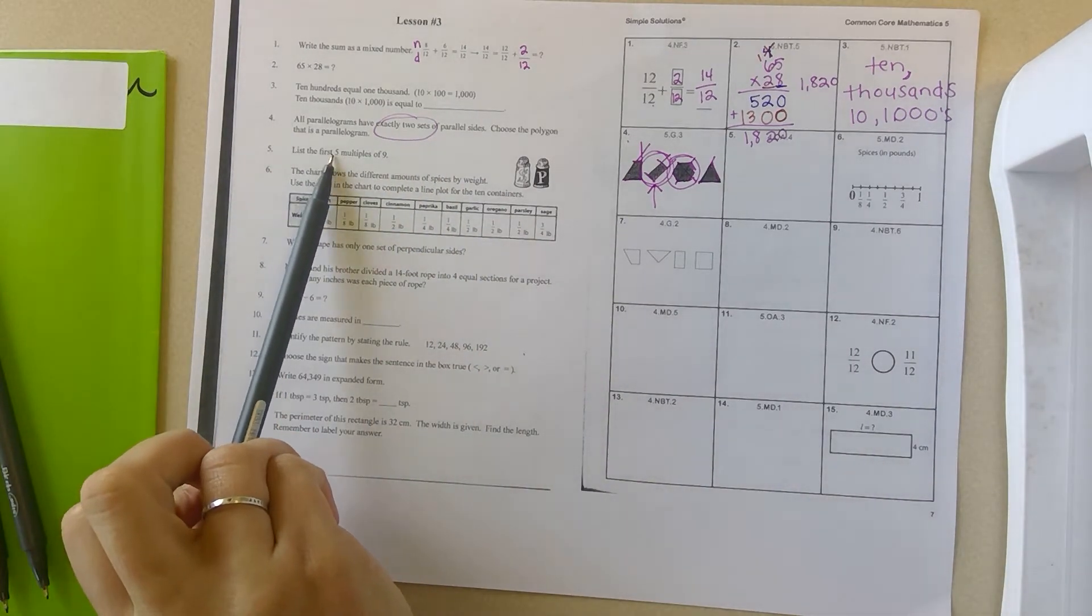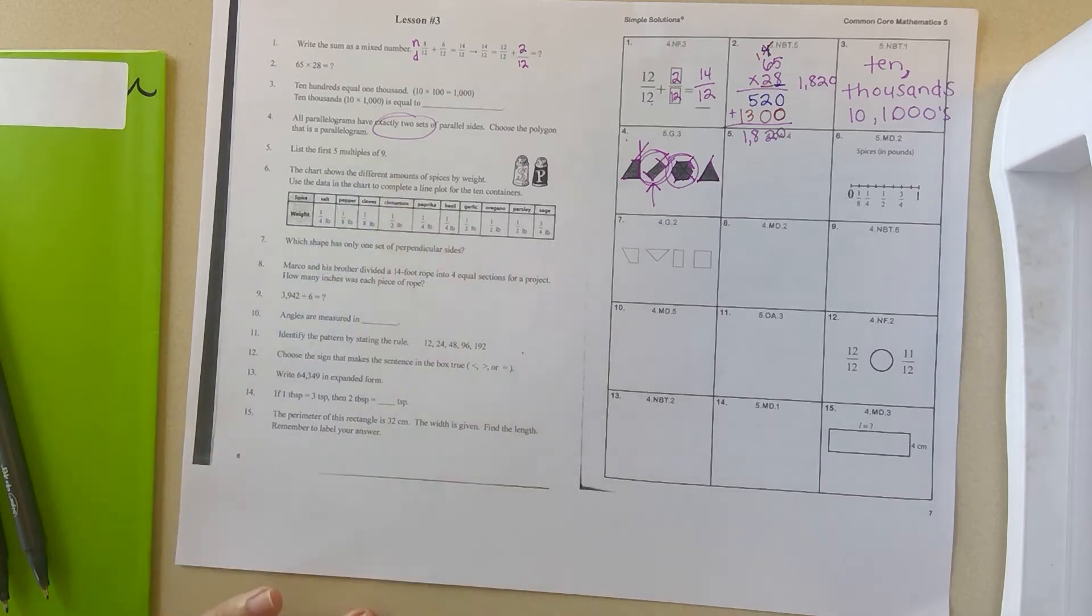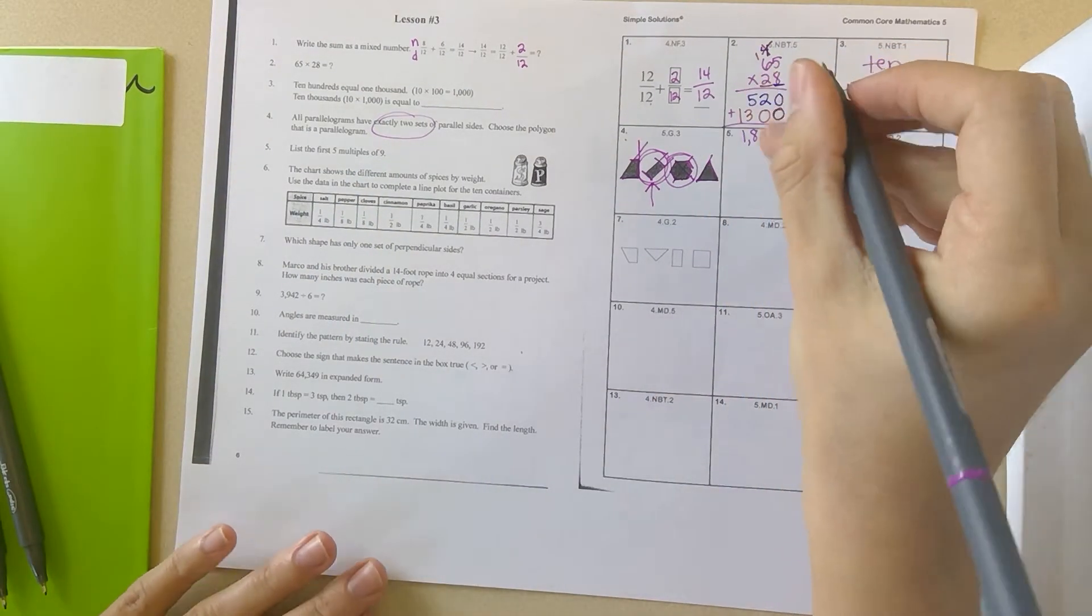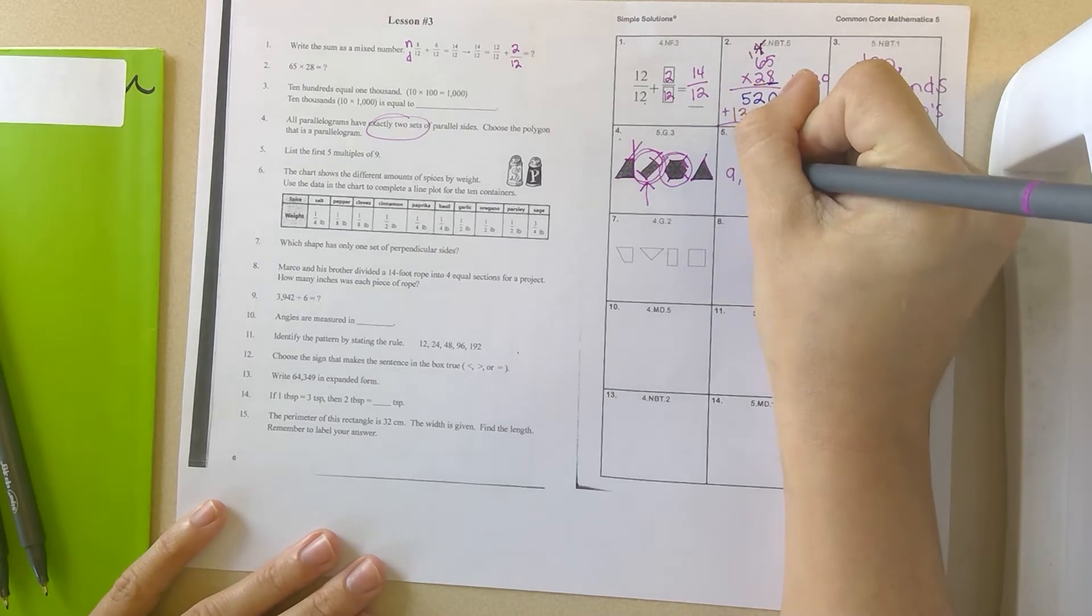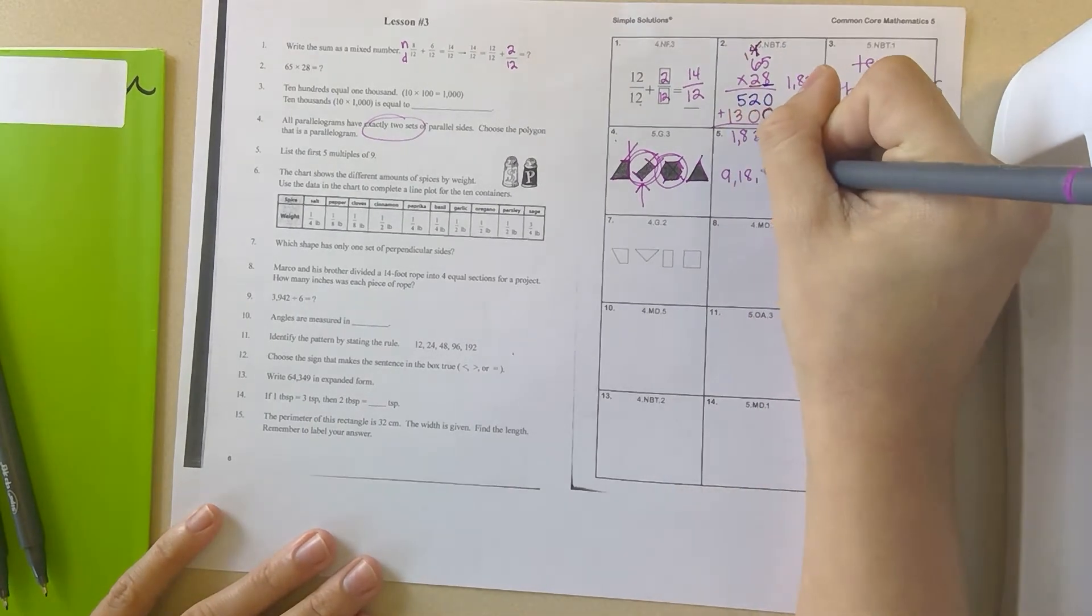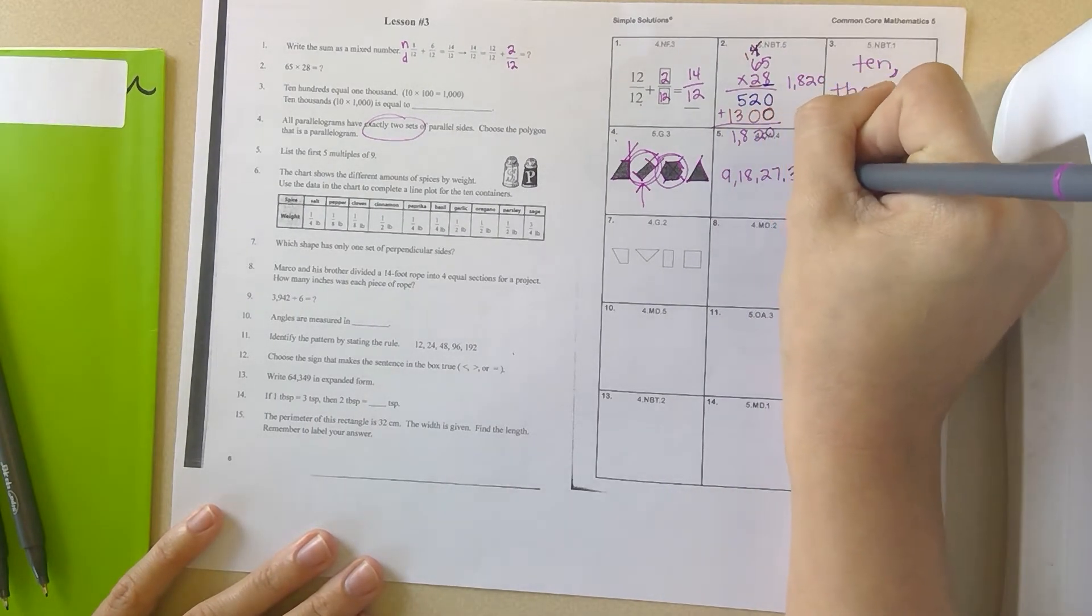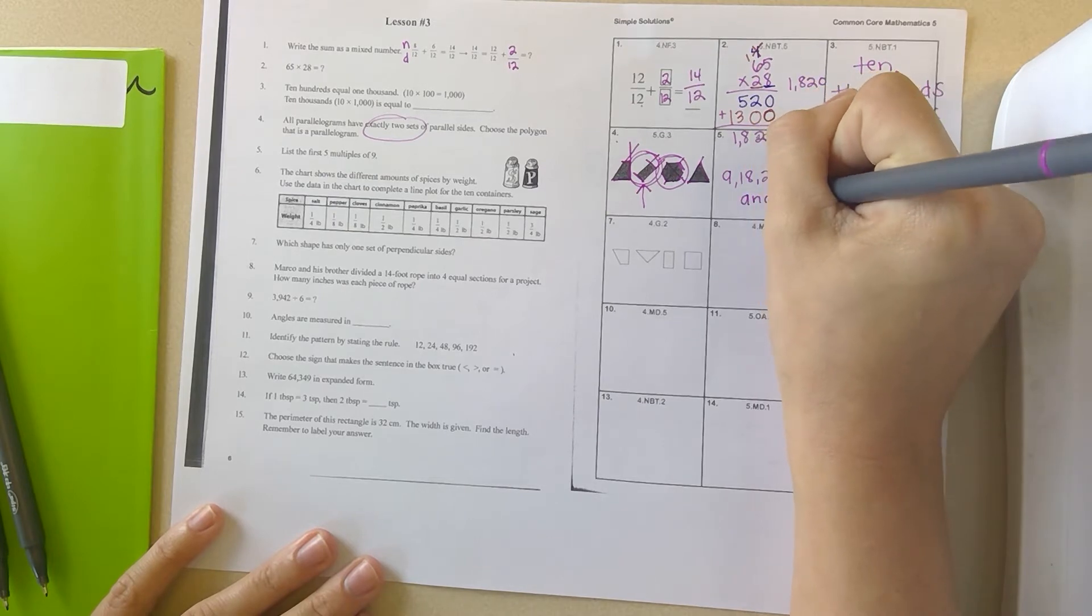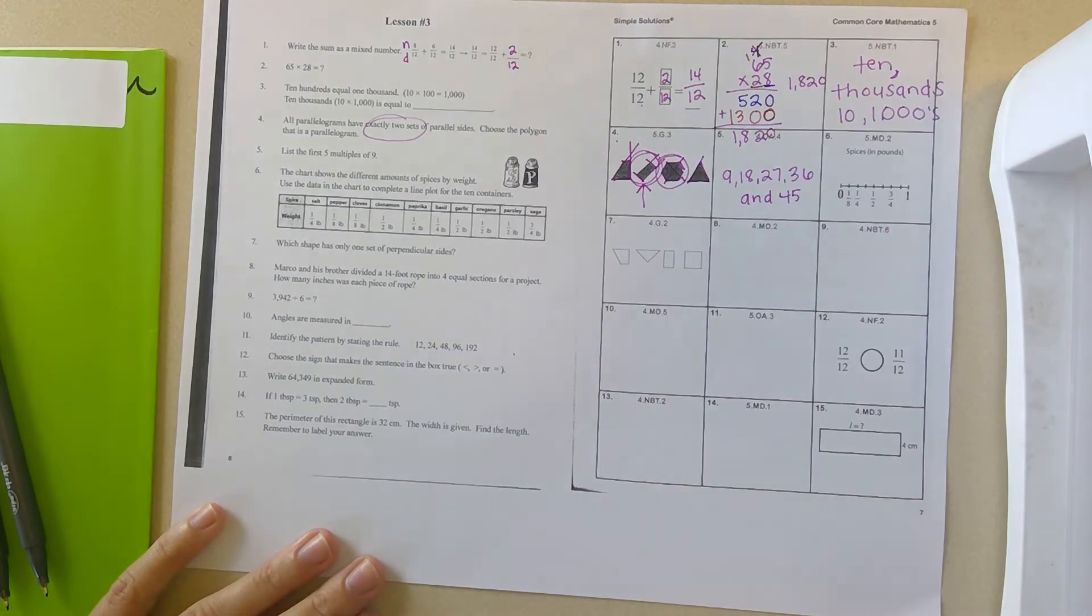Number five, list the first five multiples of nine. So basically, you're skip counting by nine five times. So there's nine, 18, 27, 36, and 45. Those are the first five multiples.